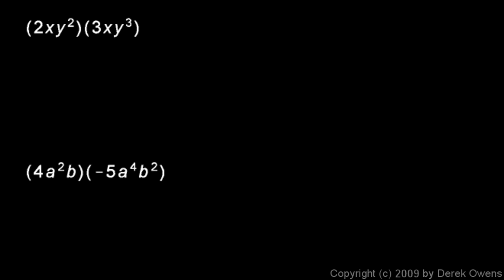So here's the first example up at the top. 2xy squared, that's one monomial, and we're multiplying it by 3xy cubed, that's another.